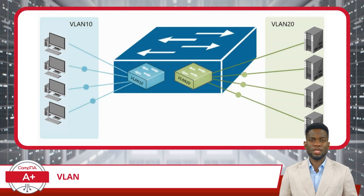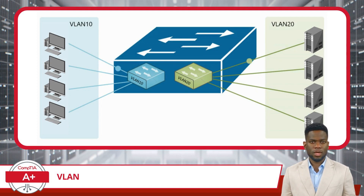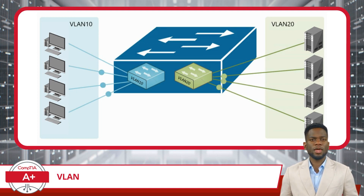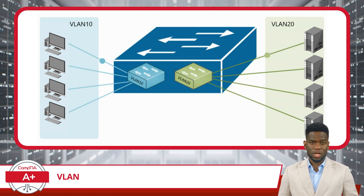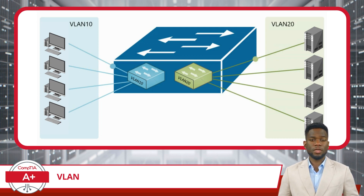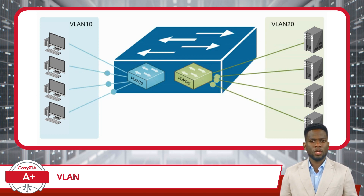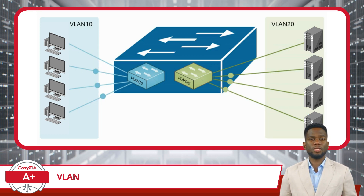In this setup, each VLAN functions as its own distinct network, enabling groups of devices to communicate as if they were on their own isolated network, even though they share the same physical infrastructure. This division helps improve security, manage network traffic more efficiently, and allows for better organization of network resources without requiring additional hardware.